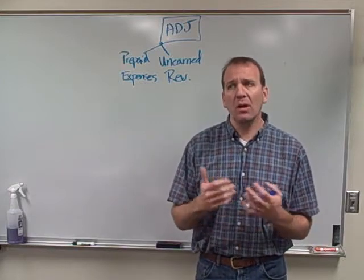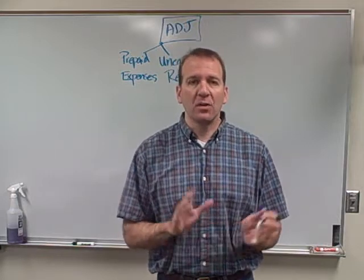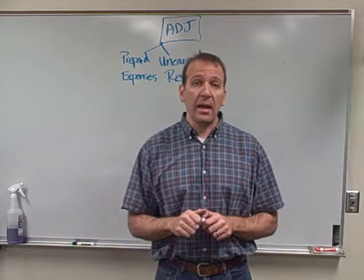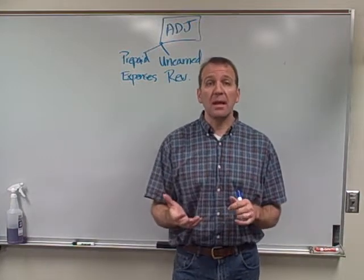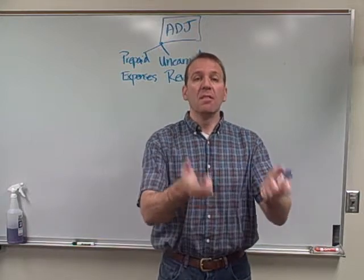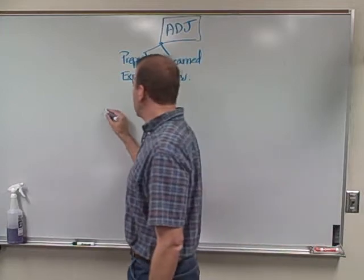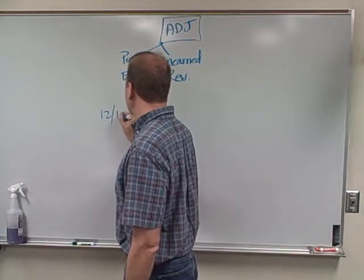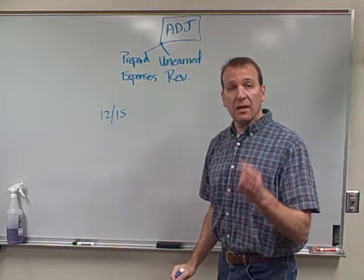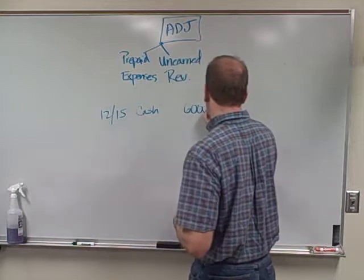Let's say a new person comes and wants to rent it, but we don't know them very well. We say: you have to pay six months up front — we're not going to rent it to you on a monthly basis right now. So they'll prepay. But to us it's not a prepaid, it's unearned revenue, because they're the ones prepaying. So on December 15th, halfway through the month, they pay us six thousand dollars — a thousand dollars a month for six months.